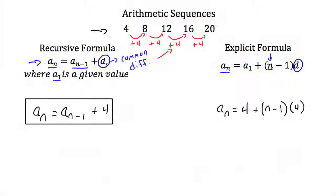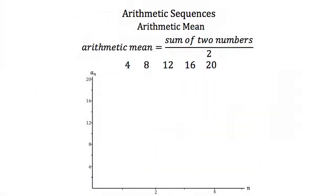You could simplify this, but that is the explicit formula for this arithmetic sequence. The last thing we have to talk about with arithmetic sequences is the arithmetic mean. The arithmetic mean is the sum of two numbers divided by 2, and we can use this to find the halfway point between two terms. Here again we're given the sequence 4, 8, 12, 16, and 20.